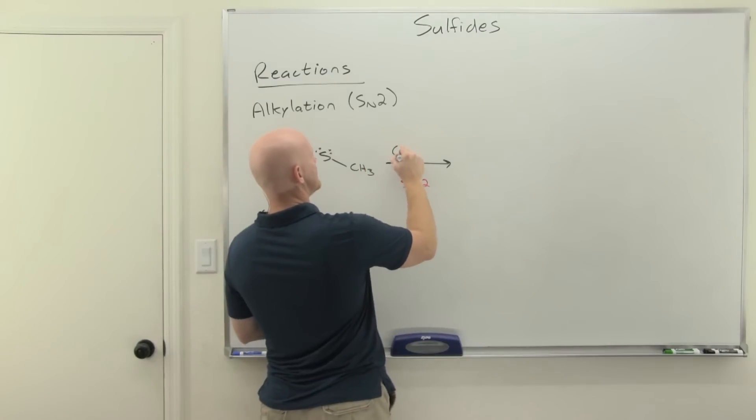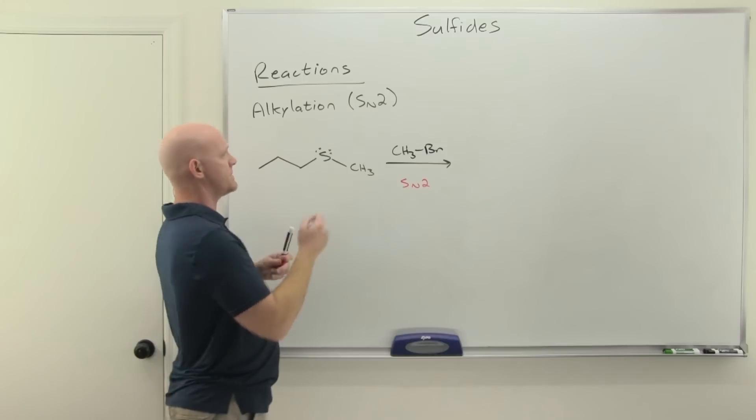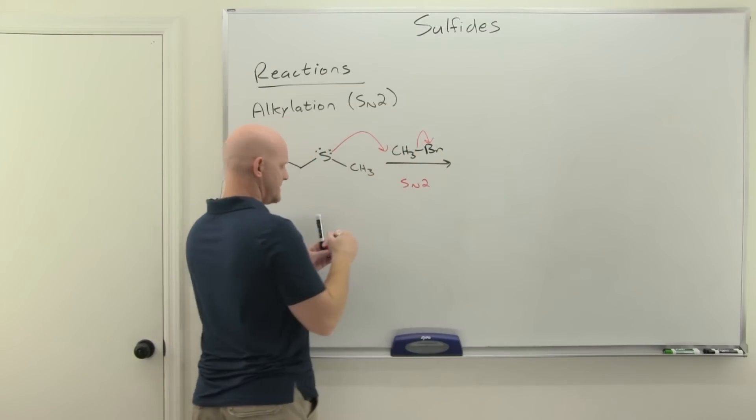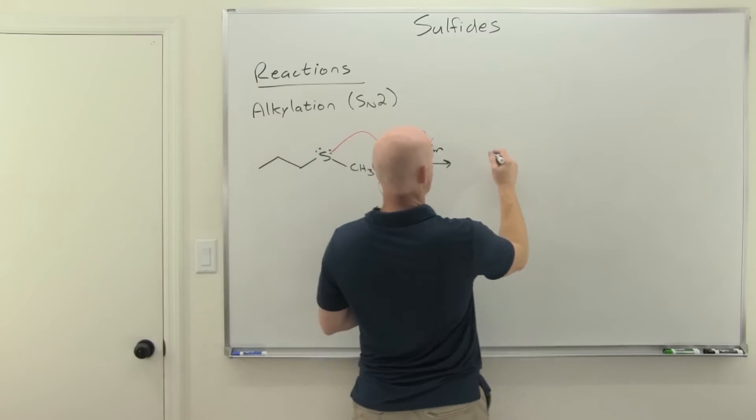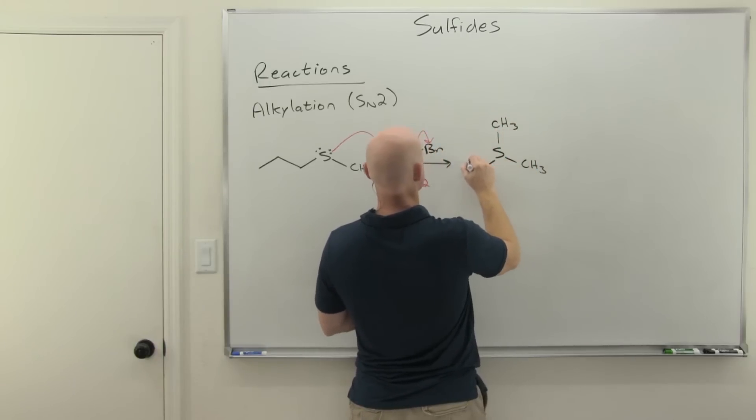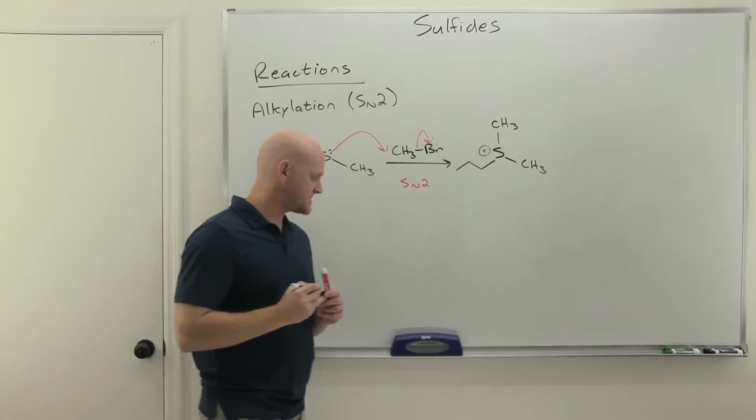And so in this case, I'm going to react it with an alkyl halide, and I'm just going to use methyl bromide here. And we're just going to do straight up backside attack. So SN2. Kick off that leaving group. And so now with a neutral nucleophile, you're going to end up with a positively charged product here, with positive charge on that sulfur.